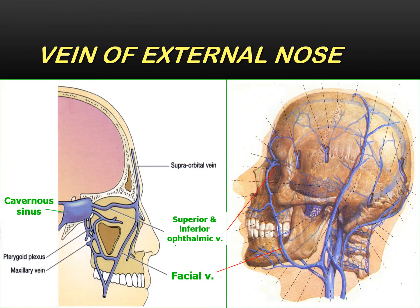Here is a demonstrative photo of the veins of the external nose. You can see how they are connected to the cavernous sinus, which is directly and closely related to the brain. You can recognize all the veins coming from the nose and the face going directly to the cavernous sinus.